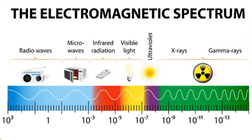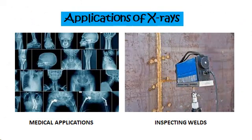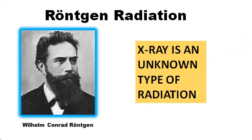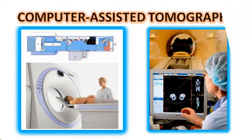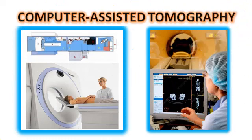Next to the ultraviolet spectrum is X-rays. X-rays are high energy waves which have great penetrating power and are used extensively in medical applications. In many languages, X-rays are called Röntgen radiation after Wilhelm Konrad Röntgen, who is generally credited as its discoverer and who named it such to signify an unknown type of radiation. Within a short time of its discovery, X-rays were being used in medical facilities to image broken bones with a technique called computer-assisted tomography.